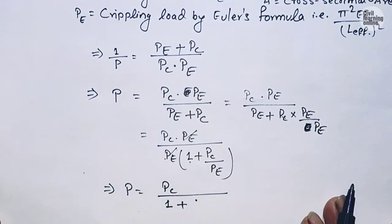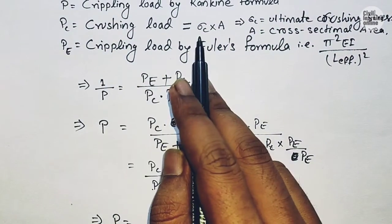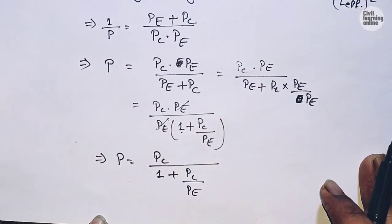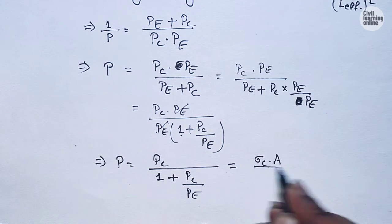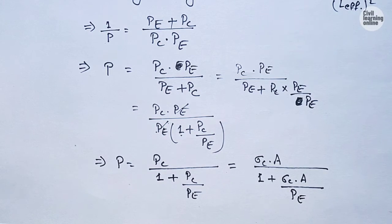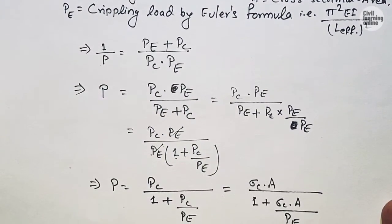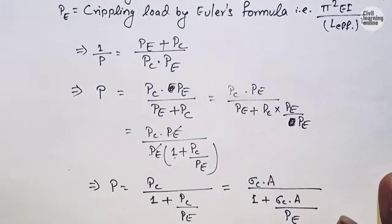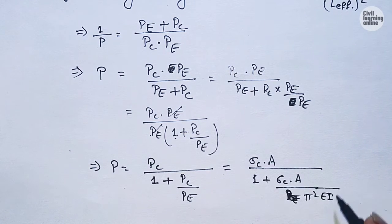We know that the crushing load PC = sigma_C × A, so we substitute this value. The equation becomes P = sigma_C × A divided by (1 + sigma_C × A divided by PE). We also substitute PE using Euler's formula: PE = π²EI / Le², where Le is the effective length of the column.